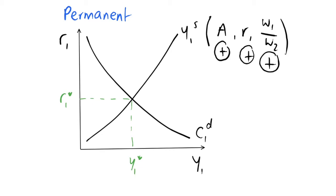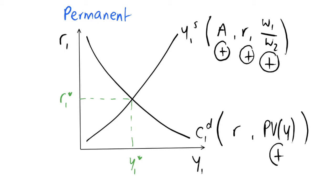Our demand curve C1D depends on the interest rate as well, and it depends on the present value of income of our representative consumers. Consumption depends positively on our present value income and negatively on the interest rate, because we have an intertemporal decision about consumption over time.